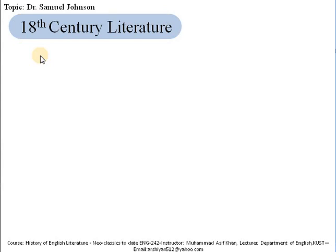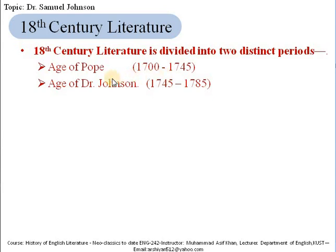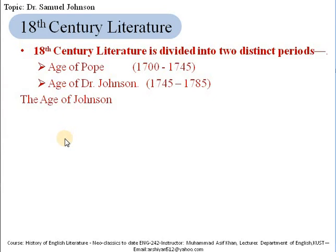As we studied in the last class, we can divide 18th century literature into two distinct periods: the Age of Pope and the Age of Dr. Johnson. These two are the most prominent personalities of English literature, and because of this prominence these parts of the century were named accordingly. From 1700 to 1745 is named the Age of Pope, and after the death of Alexander Pope, from 1745 to 1785 is named the Age of Dr. Samuel Johnson.